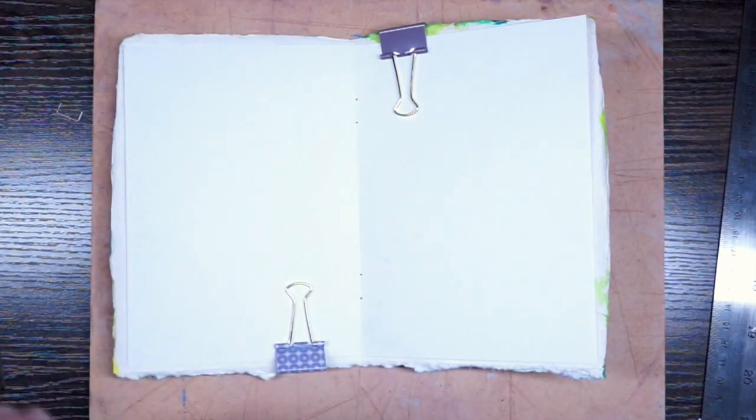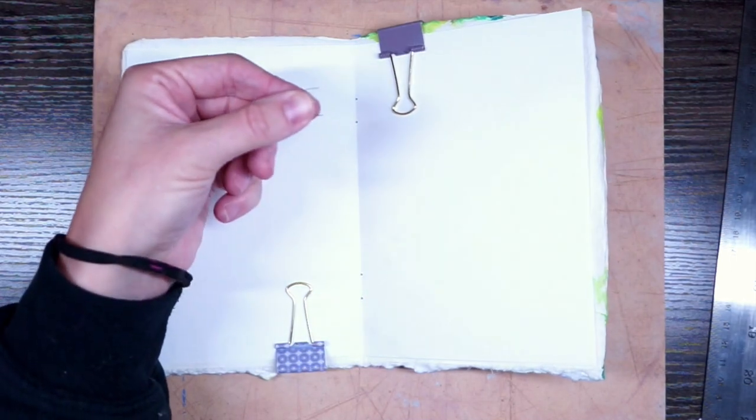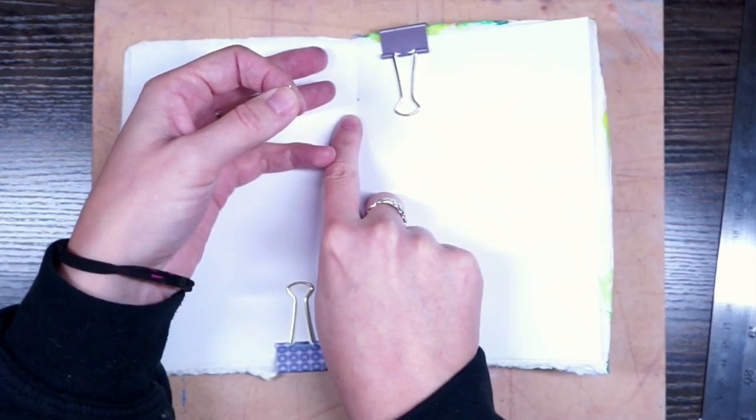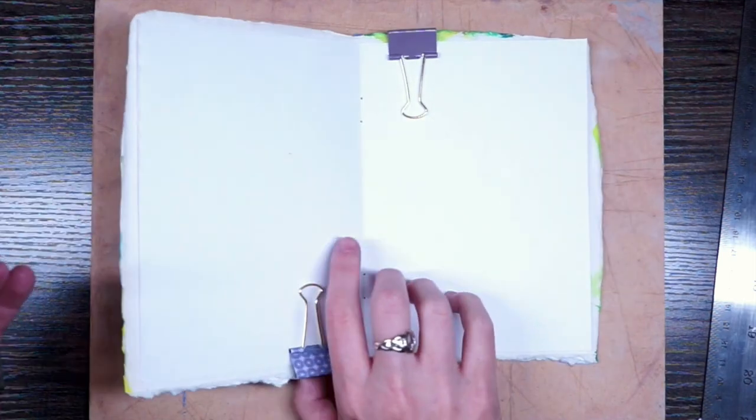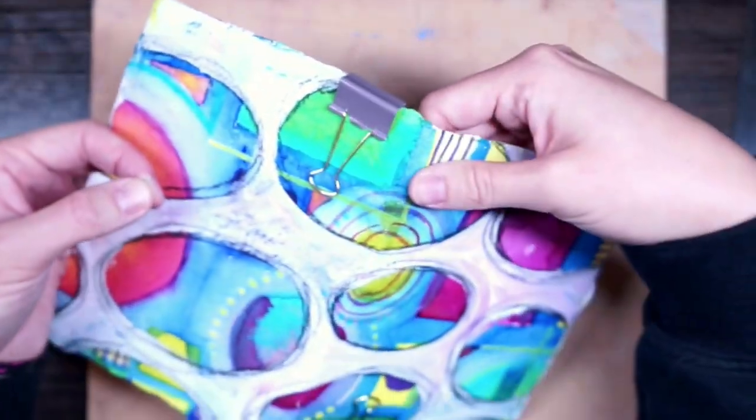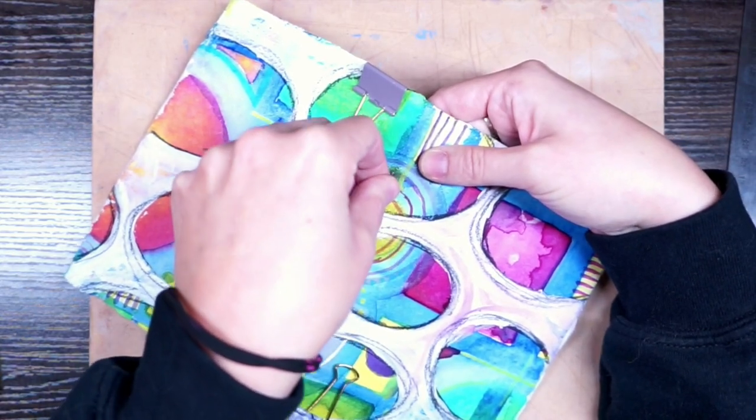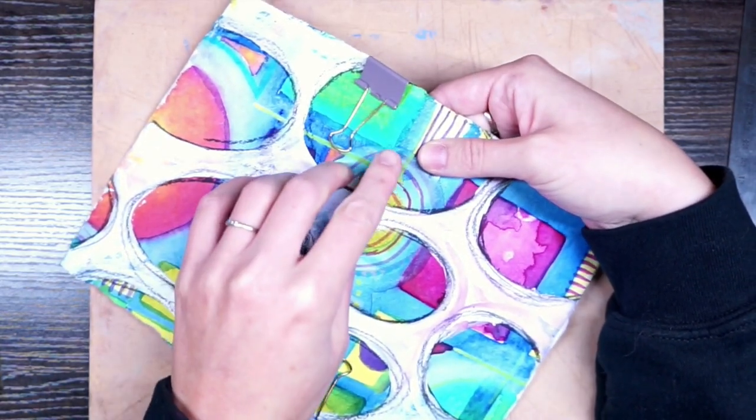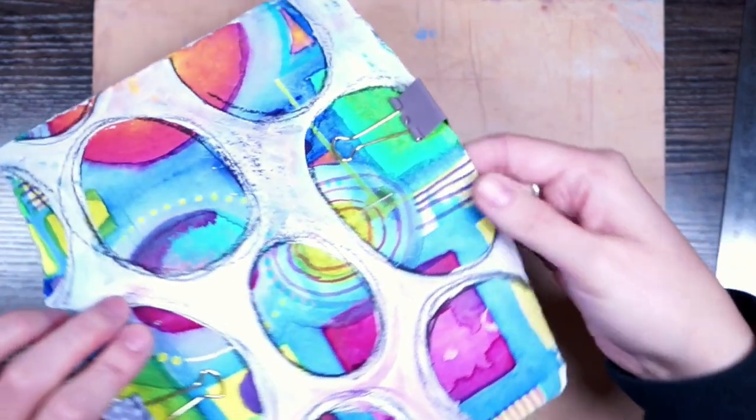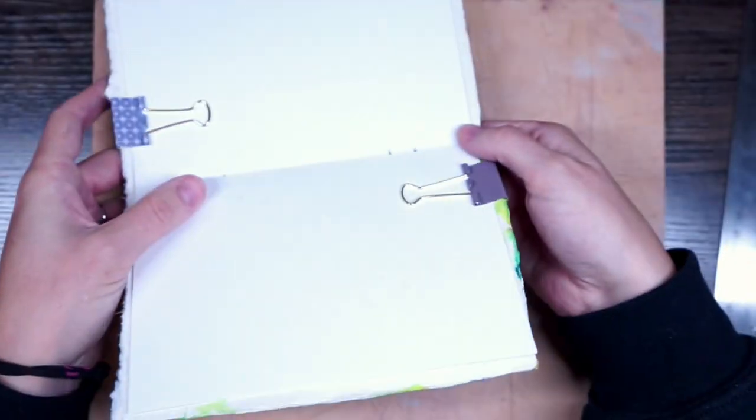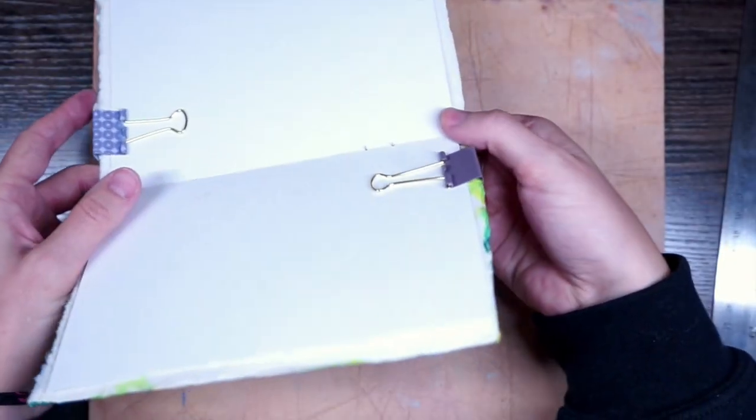You can do the same thing and stitch it, just put some thread through the holes and tie it on the back side. There's multiple ways to do it. I want the staples to close on the inside and not on the outside, so I'm going to push the staples through the holes from the back. I'll flip it over, and now we have those little pins sticking up there.